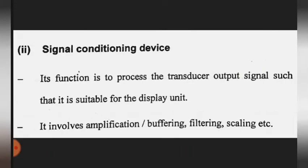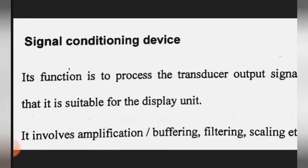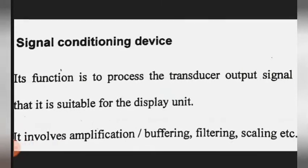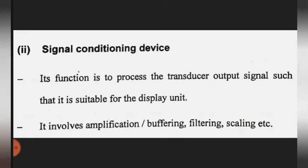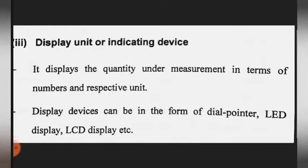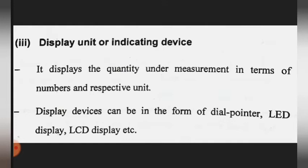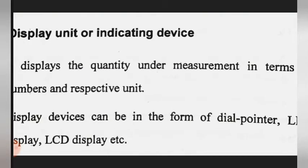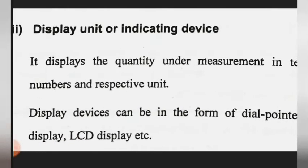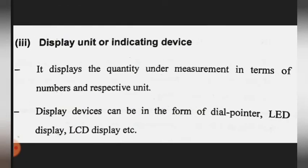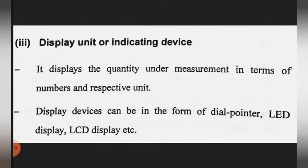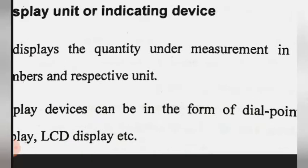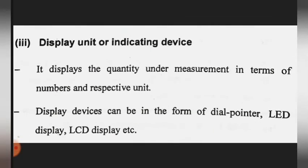The signal conditioning device processes the transducer output signal so that it is suitable for the display unit. It involves amplification, buffering, filtering, and scaling. The display unit or indicating device displays the quantity under measurement in terms of numbers and respective units. Display devices can be in the form of a dial, pointer, LED display, or LCD display.